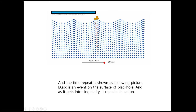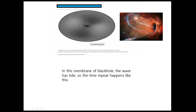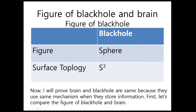The time repeat is shown in the following picture: a dog is an event on the surface of a black hole, and as it gets into the singularity, it repeats its action. In the membrane of the black hole, the wave has ties, and so the time repeat happens like this.